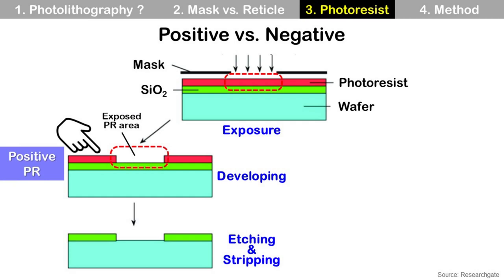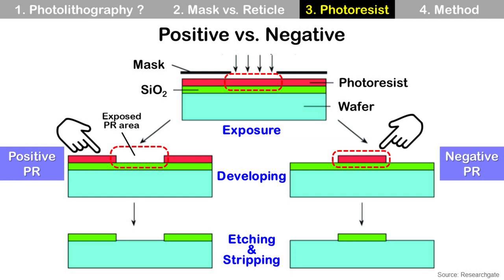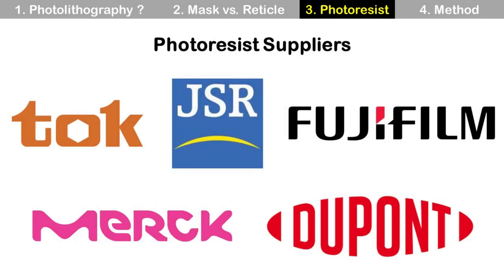There are two types of photoresist material: positive and negative. For positive photoresist, the exposed area is removed during developing. For negative photoresist, the exposed area remains and the unexposed area is removed instead. That is the major difference between positive and negative photoresist. Photoresist suppliers include Japanese companies TOK, JSR, and Fujifilm, German company Merck Group, and US company DuPont.